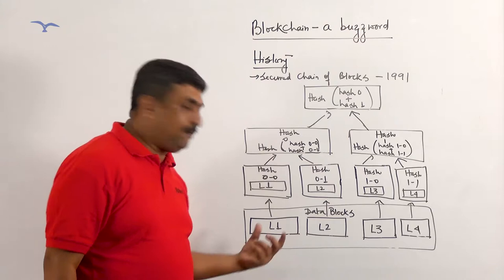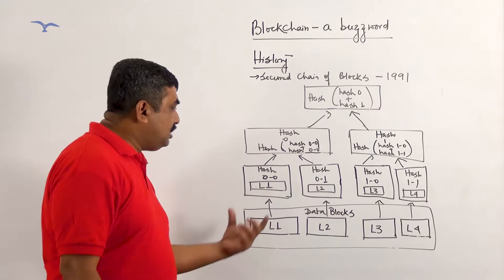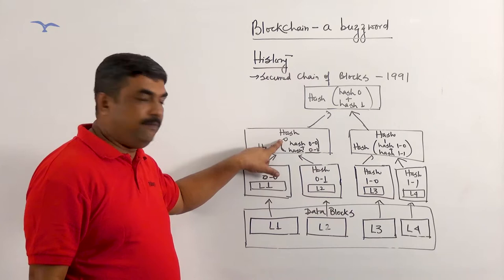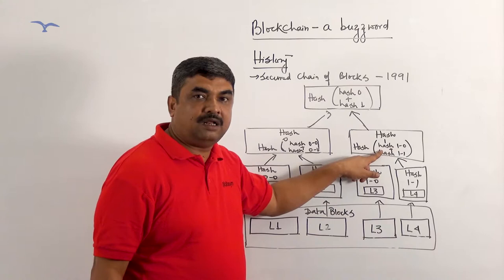If you see the diagram, there are four data blocks: L1, L2, L3, and L4. The history of L1 and L2 is being kept in the data block called 0, and the history of L3 and L4 is being kept in the data block 1.